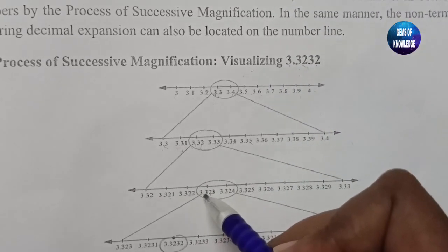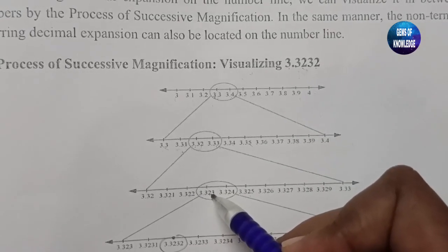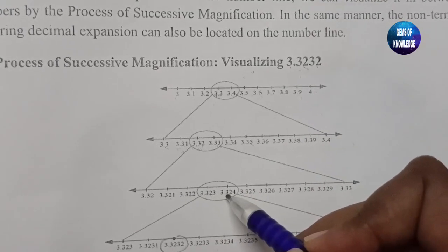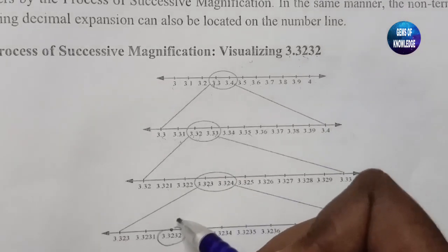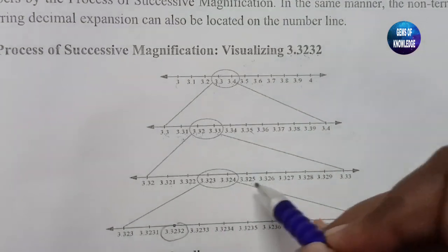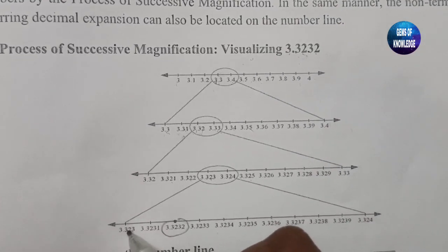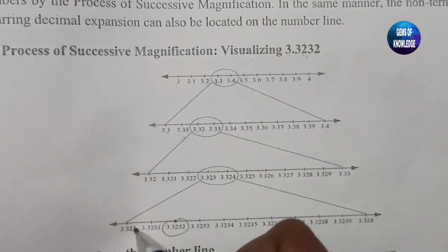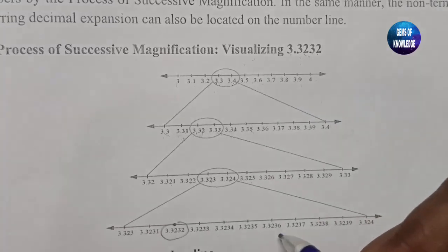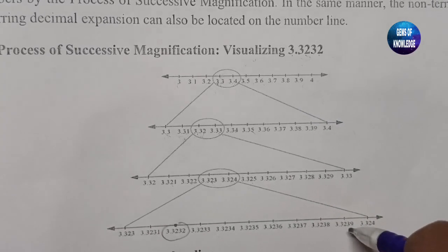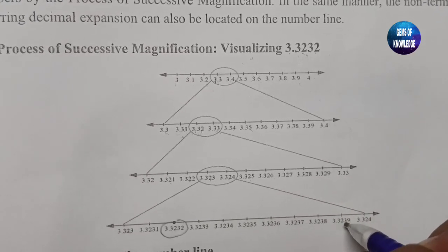We have to consider 3.323 and the next number 3.324, and again enlarge this. After enlarging, we continue with 3.3231, 3.3232, 3.3233, 3.3234, 3.3235, 3.3236, 3.3237, 3.3238, 3.3239, and 3.3240.